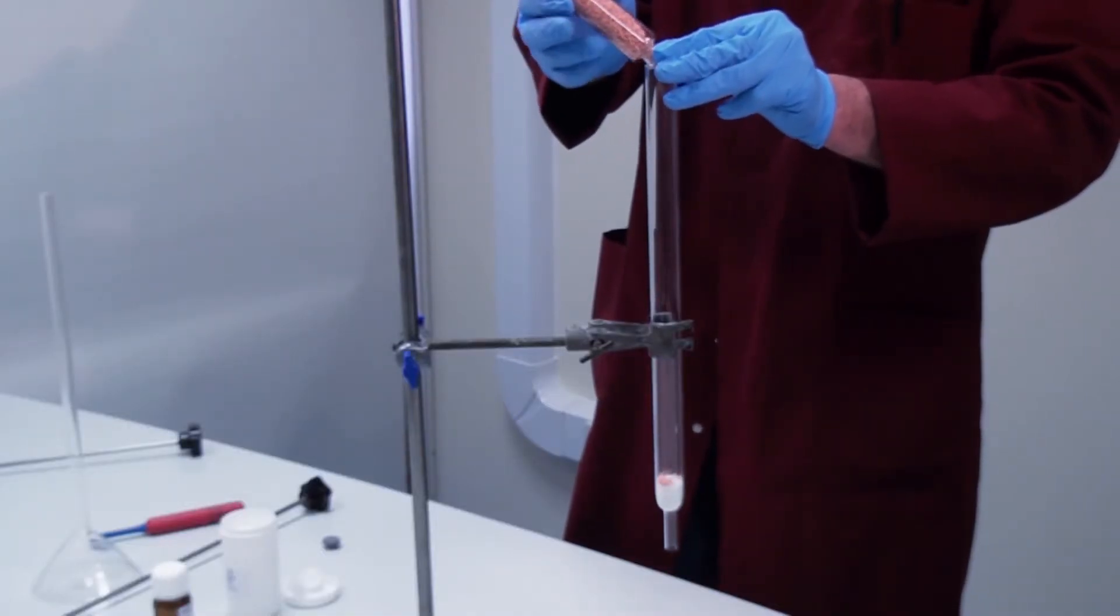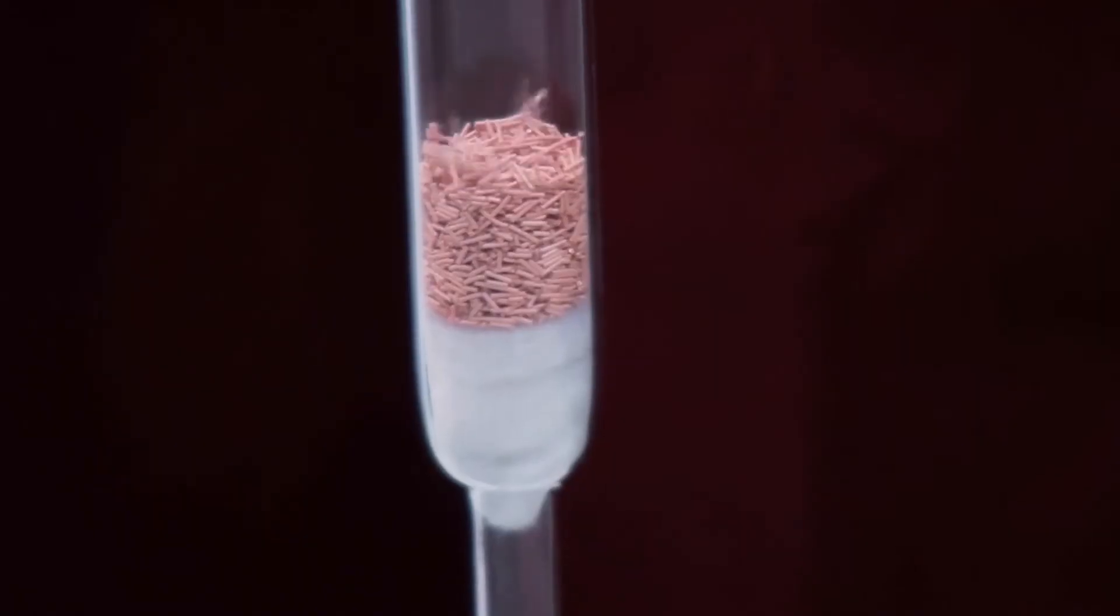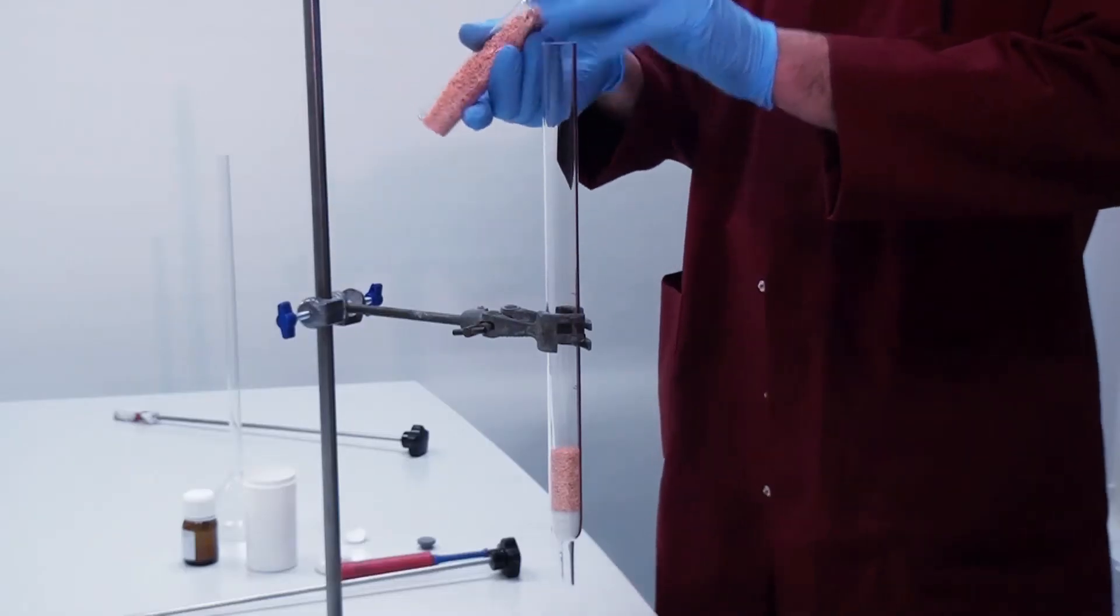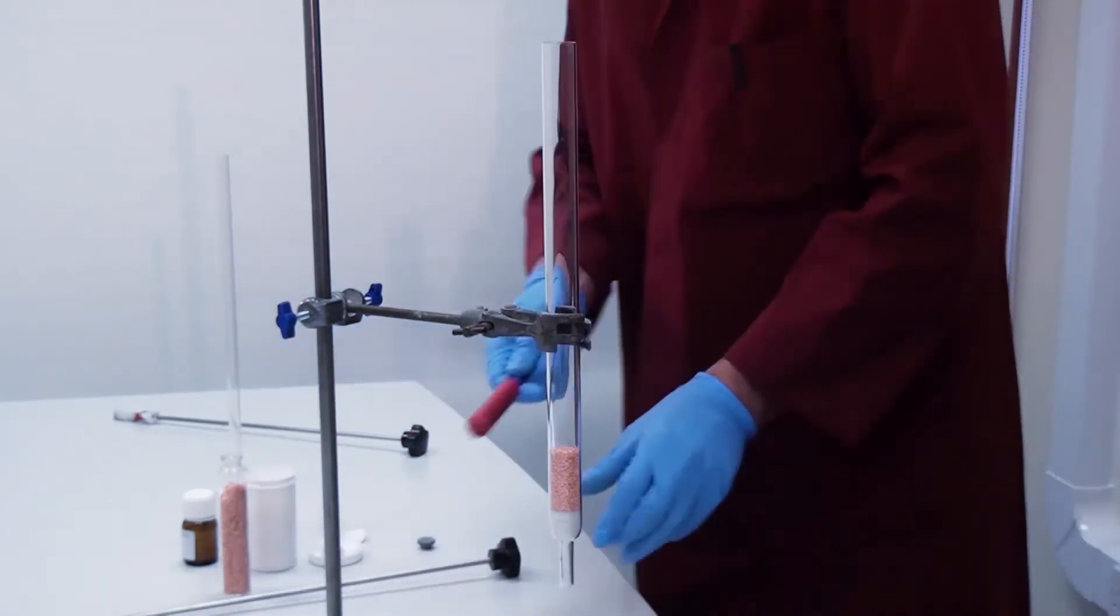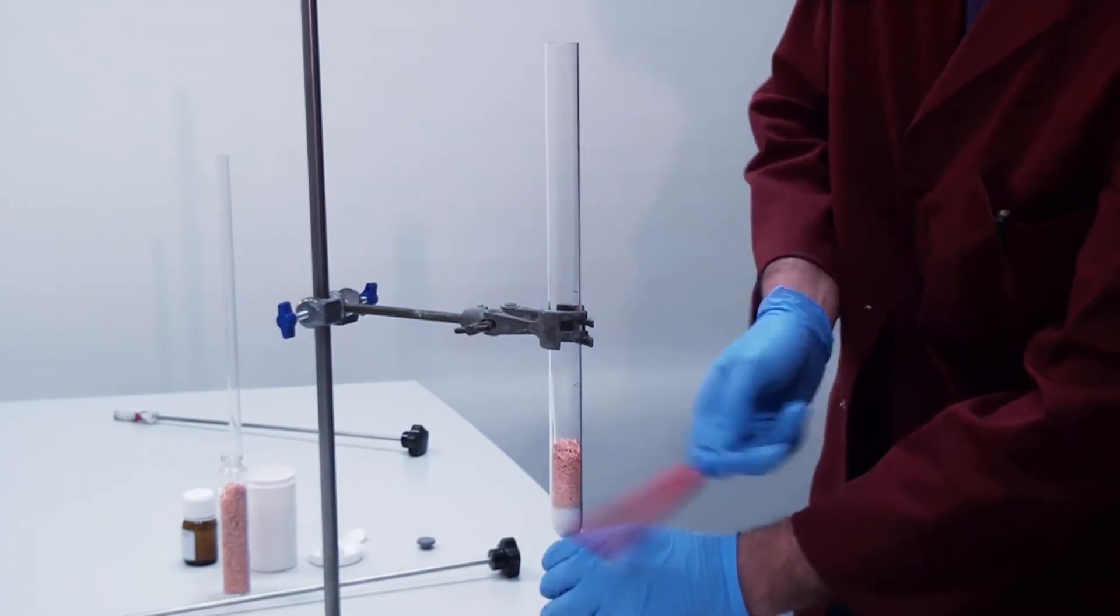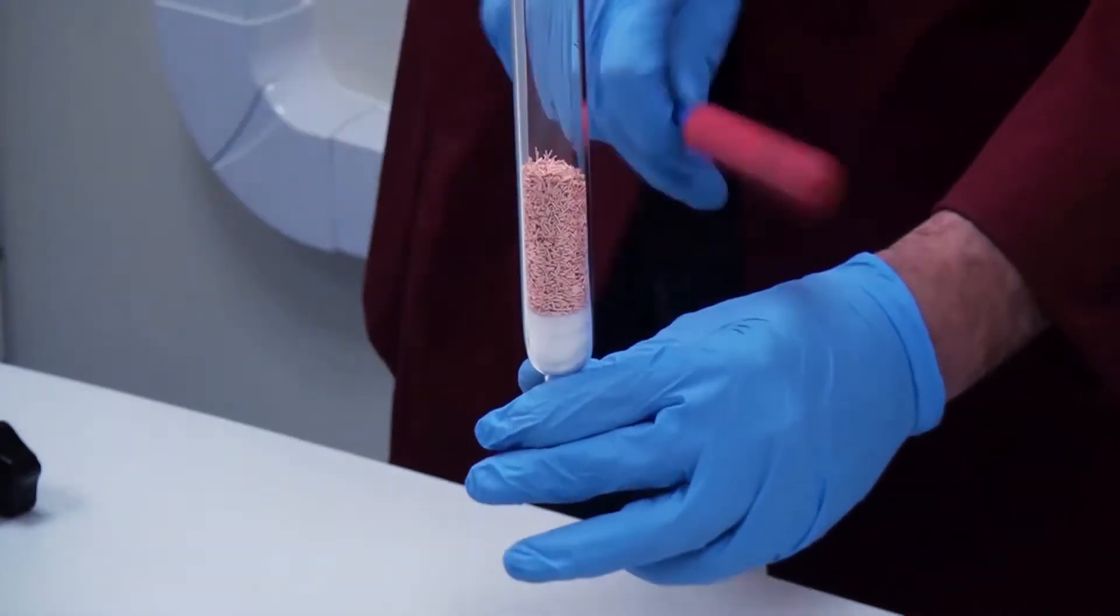Start adding some of the copper wires. Using a suitable tool, tap around the circumference of the tube to pack down the copper. Tapping around the circumference ensures even packing, which is important to avoid leaving voids that may lead to channeling of gases.